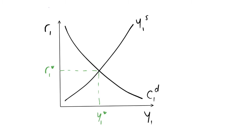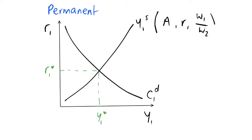To start off with, let's consider a permanent shock. Before we go into what shifts, I'll outline what each of these curves — the supply and demand curves — actually depend on. The supply curve, Y1S, depends on our productivity parameter A, our interest rate R, and our relative wages W2, and it depended positively on all three of these factors. Our supply comes through a representative firm that is choosing labor and nothing else.